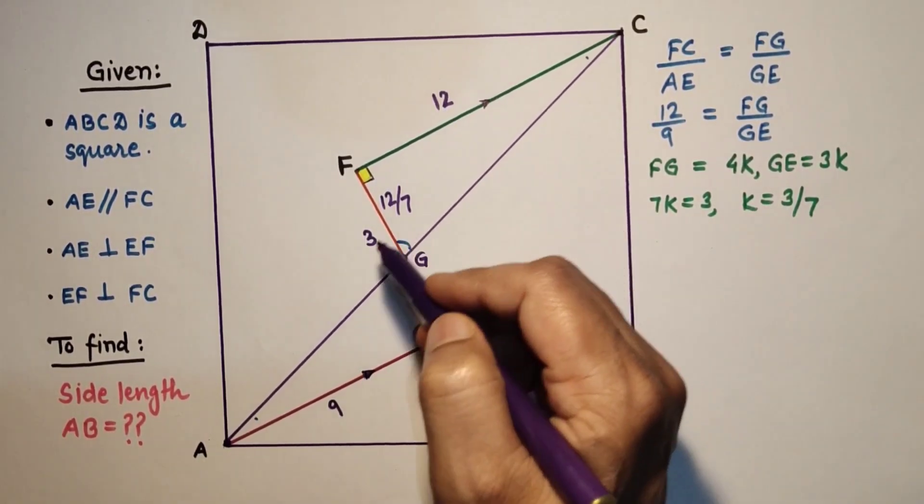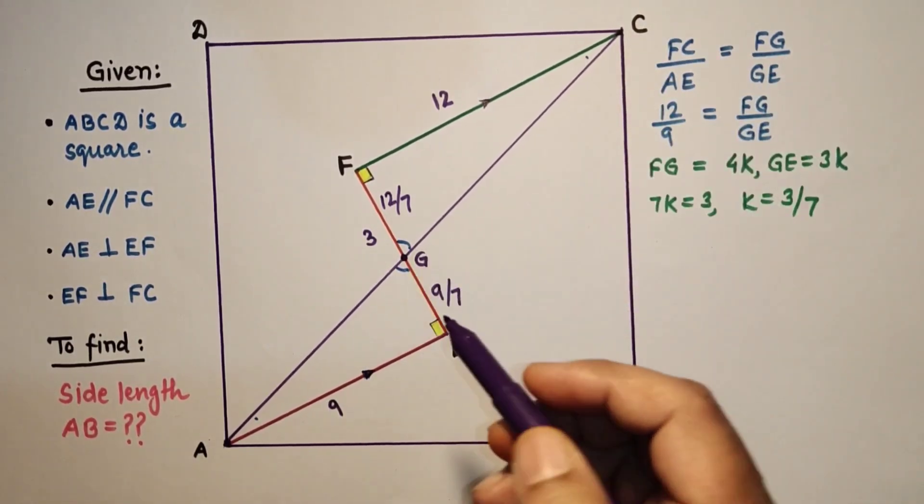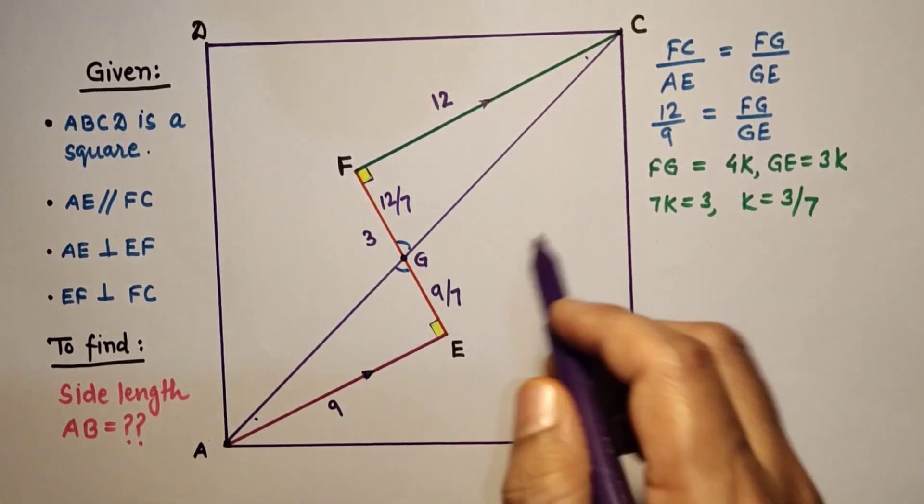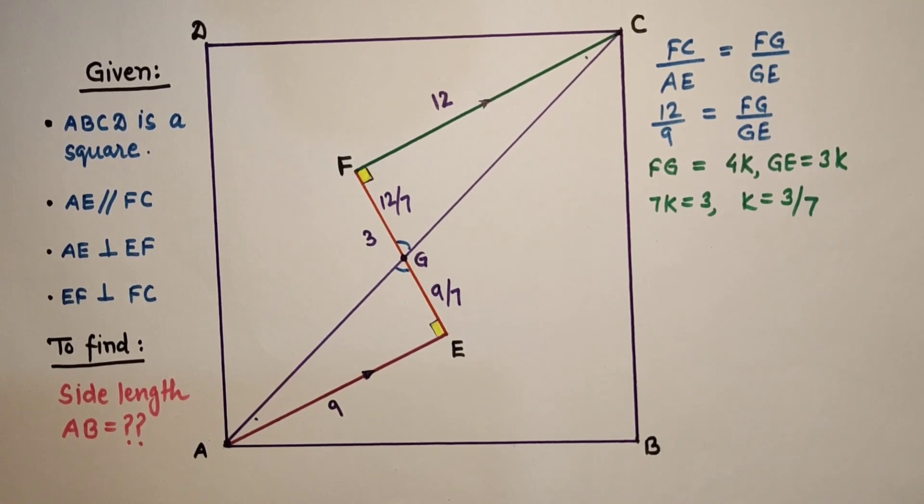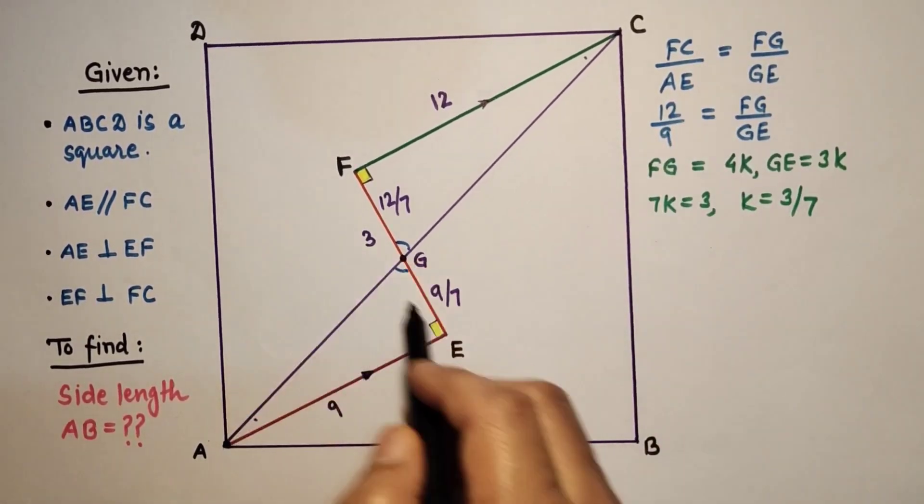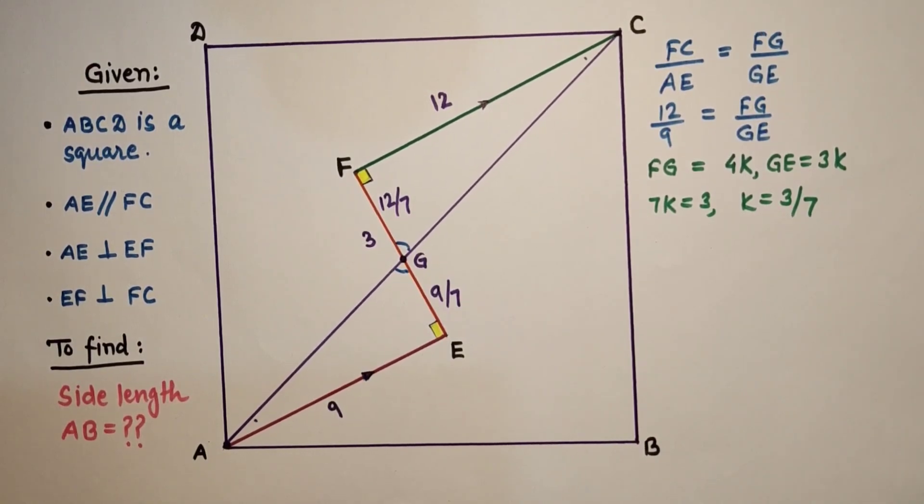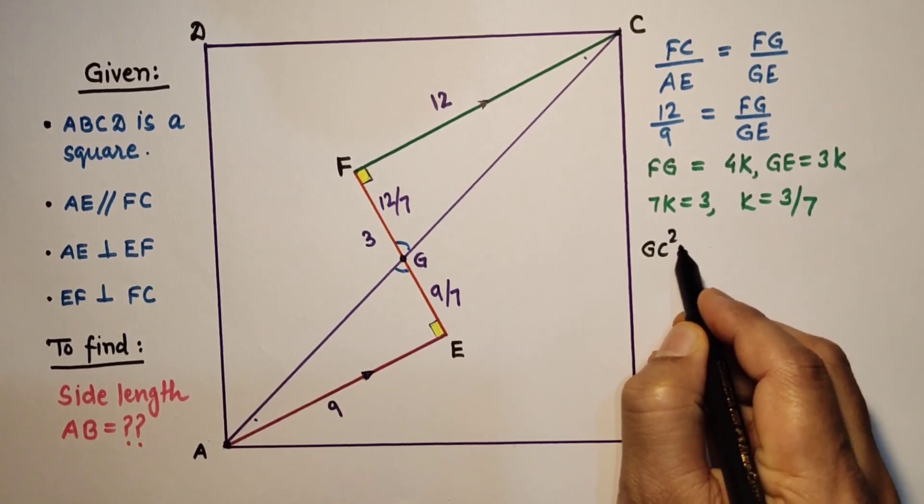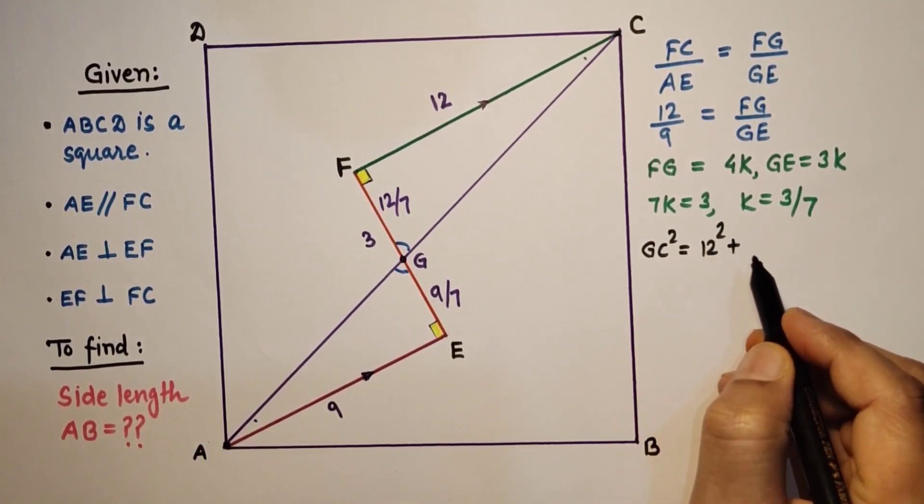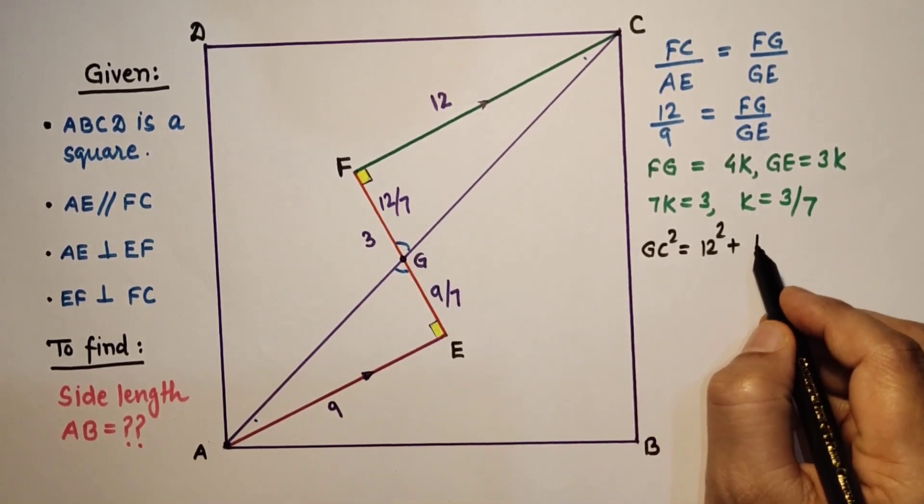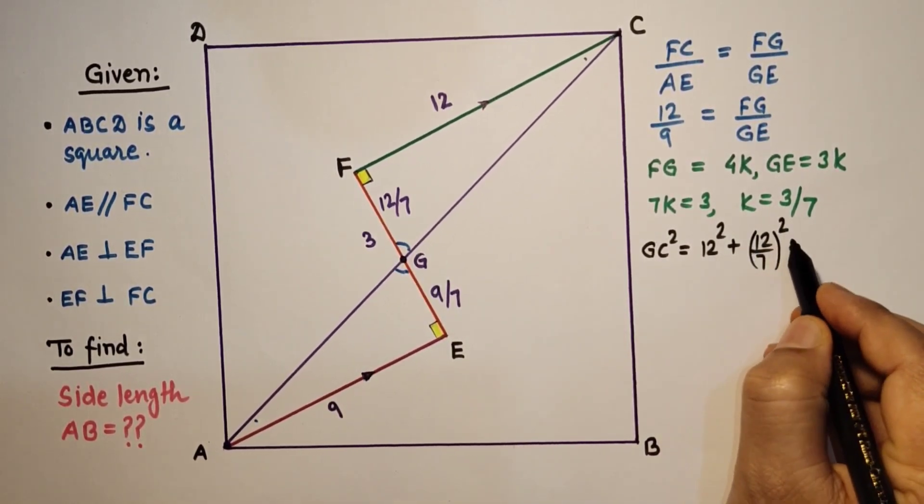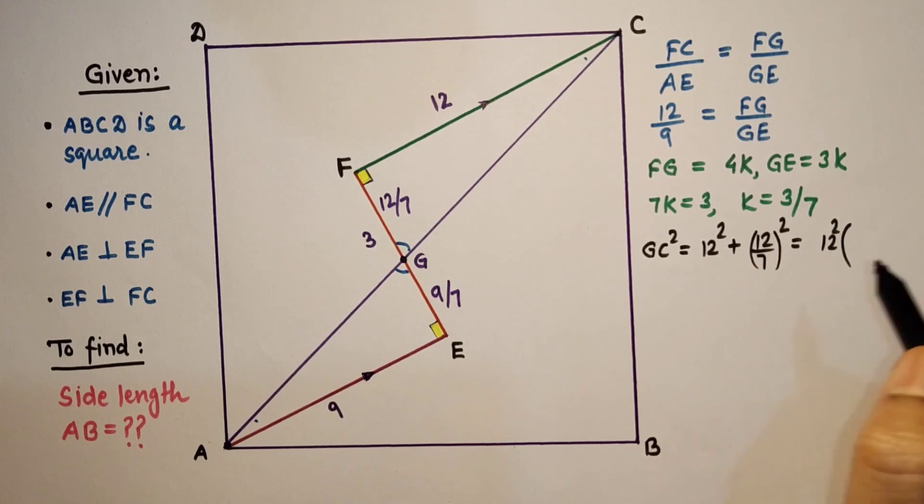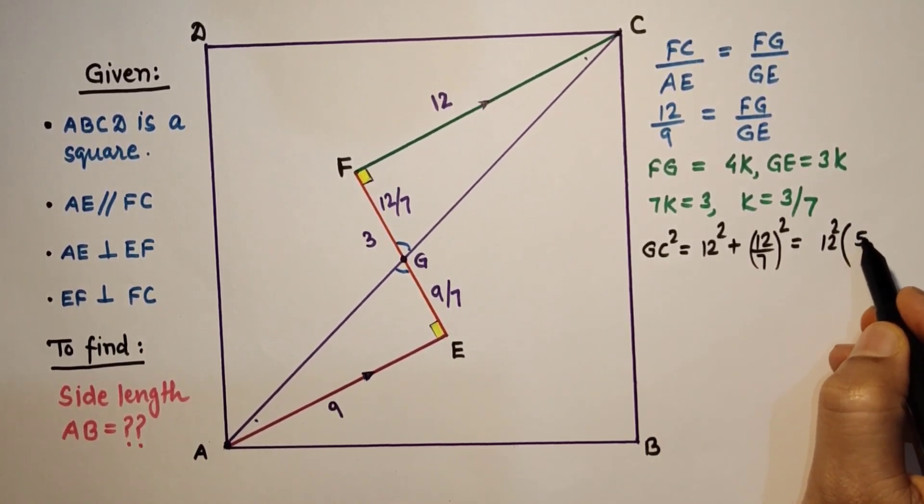Now we can use Pythagorean theorem to get GC and GA. And after getting GC and GA, if we add we will get diagonal AC. So by Pythagorean theorem, GC square is equal to FG square plus FC square. So GC square is equal to 12 square plus 12 by 7 square. If we take 12 square common, it will be 1 plus 1 by 49, that is 50 by 49.